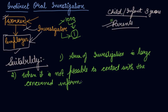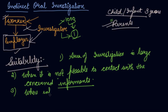The person for whom the information is actually collected is your informant. The concerned informants are not capable of giving information because of their ignorance or illiteracy — the workers might be illiterate and not able to give the information. So where informants are not able to give information, such as a child who cannot provide information, this method is used.